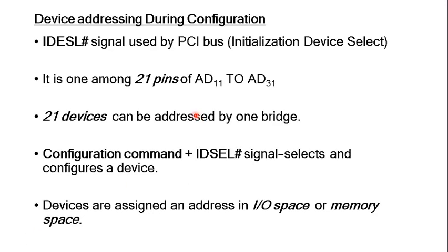Any device that requires configuration, or any device first inserted into the motherboard through a PCI slot, needs to be identified and recognized by the PCI bridge in order to initialize it. During the initialization step, the PCI bridge needs to refer to that device using some method. The scheme used is an internal addressing scheme within the PCI bus. PCI bus is effectively a bus topology controlled by a PCI bridge, and that bridge addresses individual devices based on a local addressing scheme using the Initialization Device Select (IDSEL) signal. A single PCI bridge supports 21 such arrangements.